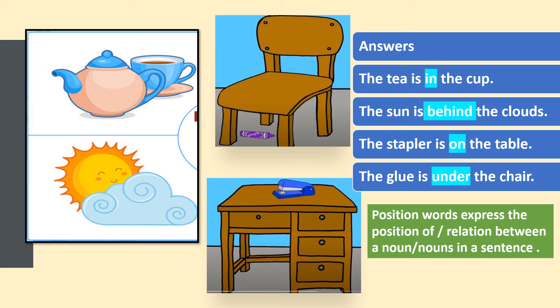Children, in these sentences and in these answers — in, behind, on, under — these are the position words. And in the first sentence, tea and cup are nouns or naming words. So the position word 'in' is expressing the position of the tea, and it is telling us the relation between the tea and the cup.